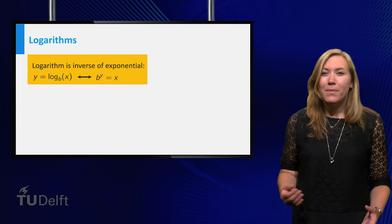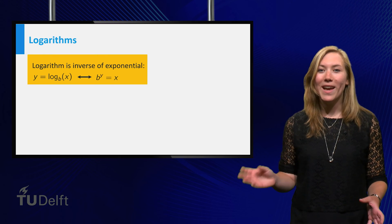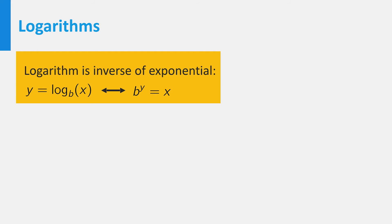The logarithm base b is the inverse function of the exponential function b to the power x. If b is unequal to 1, the exponential functions satisfy the horizontal line test, so the inverse exists.